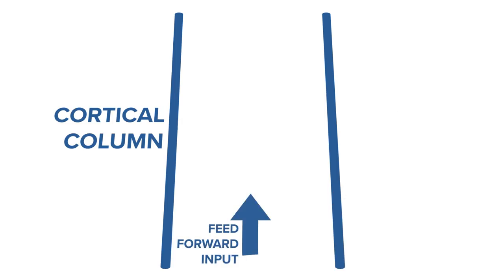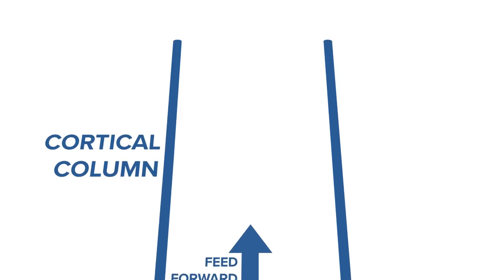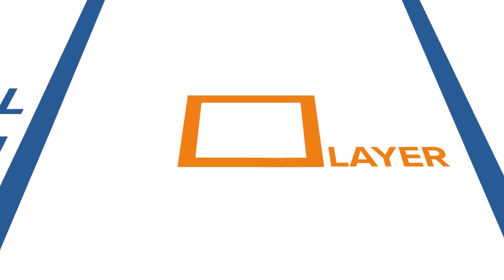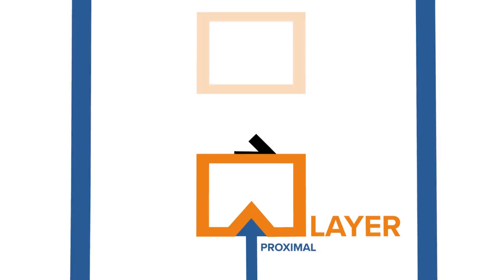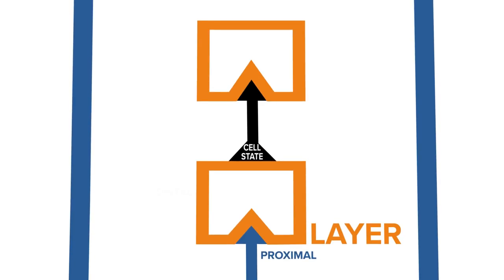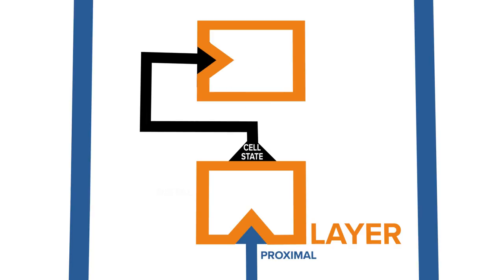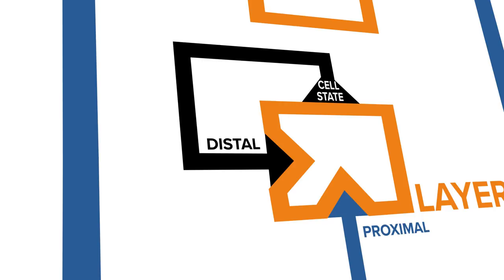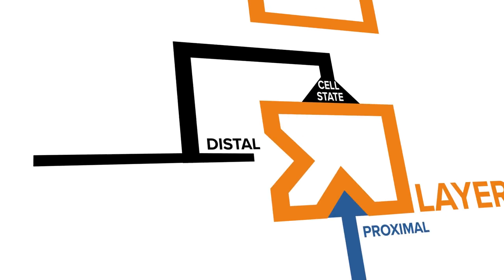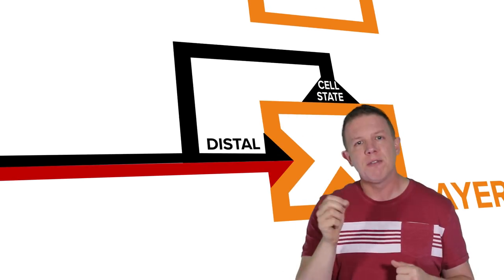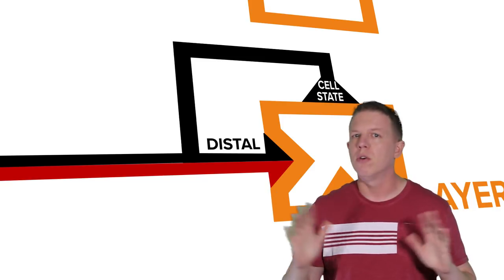A cortical column gets feedforward input, which comes from the direction of the senses. A layer's input can be one of at least two types: proximal or distal — let's forget about apical for now. A layer's output is the state of its cells. The output of a layer can project to the inputs of other layers, including itself. All layer input and output can be defined in terms of SDRs. Because of the inherent properties of semantic representations with SDRs, merging and splitting of axon bundles is okay, so the data flows in this diagram can break apart or join together between layers. The layer is unaware of the context of its input.